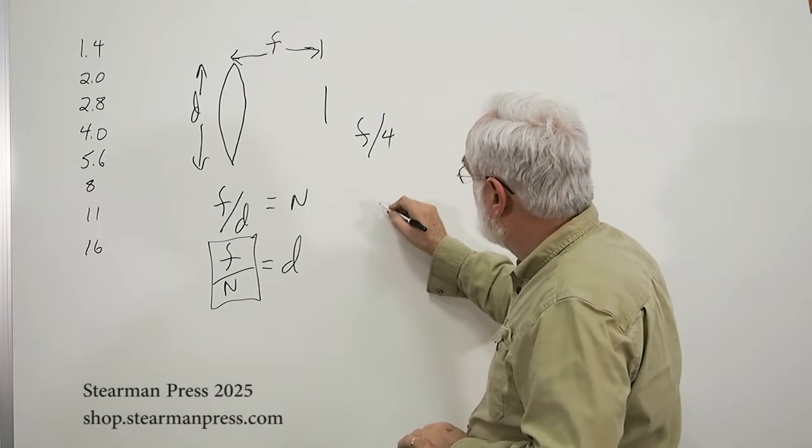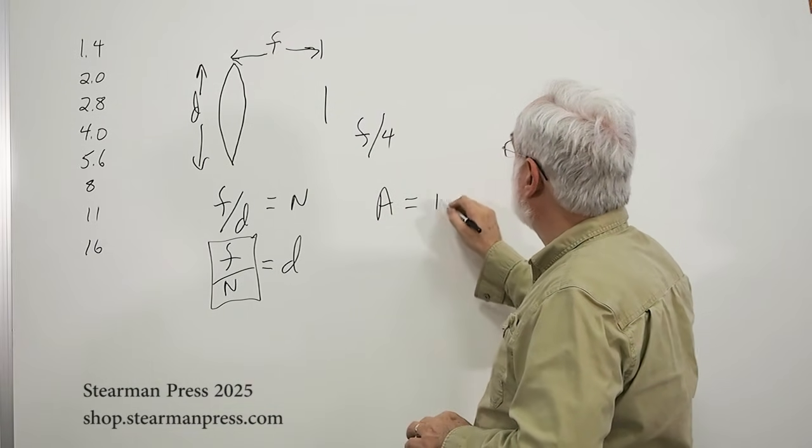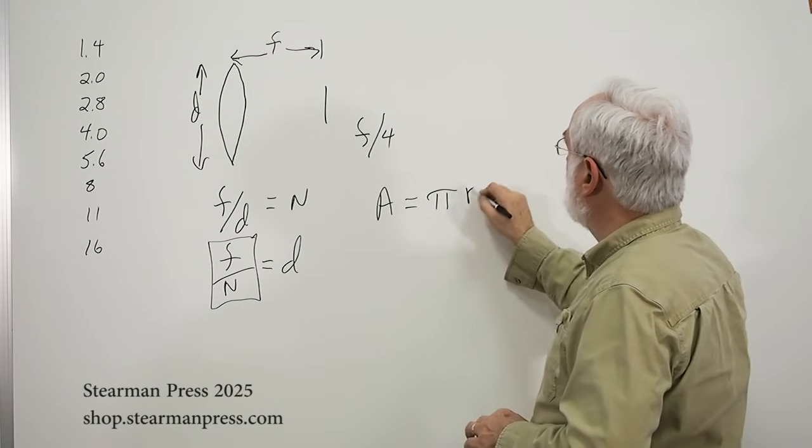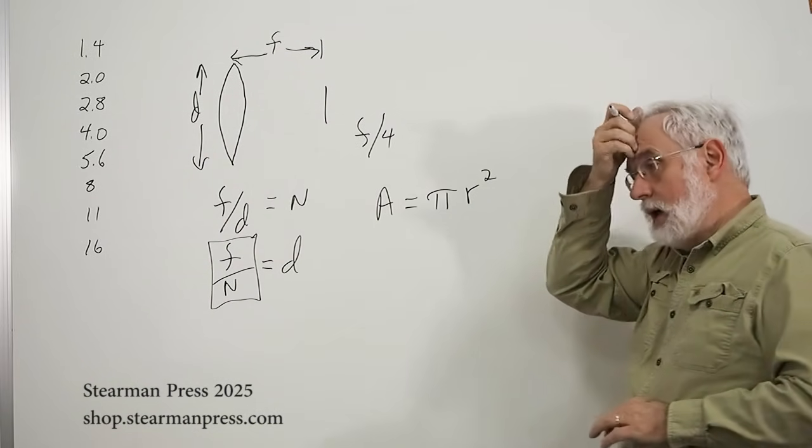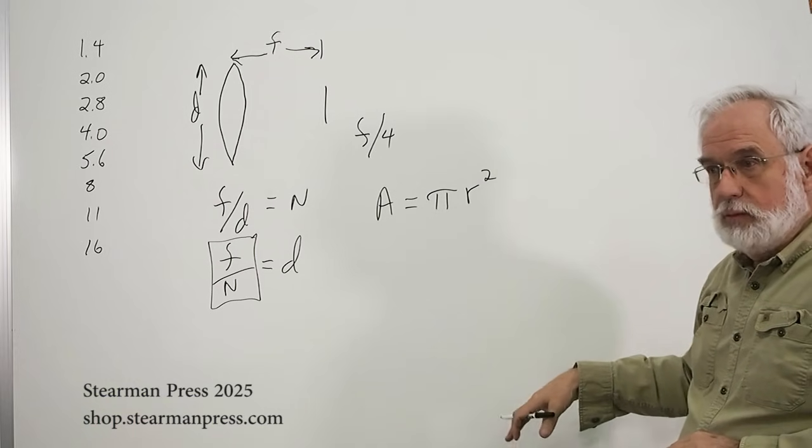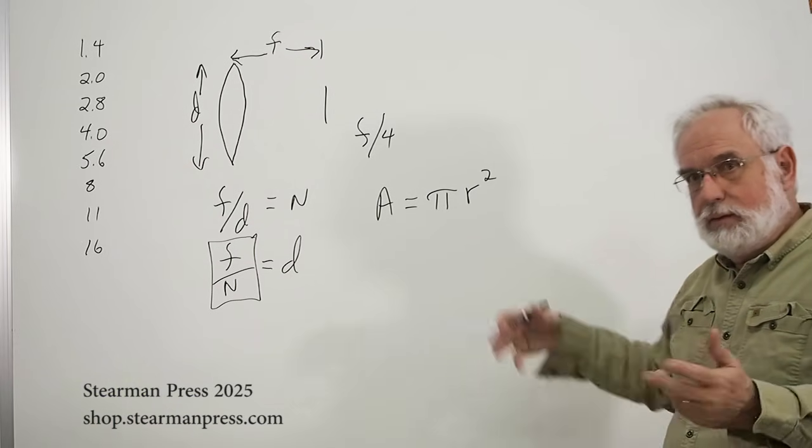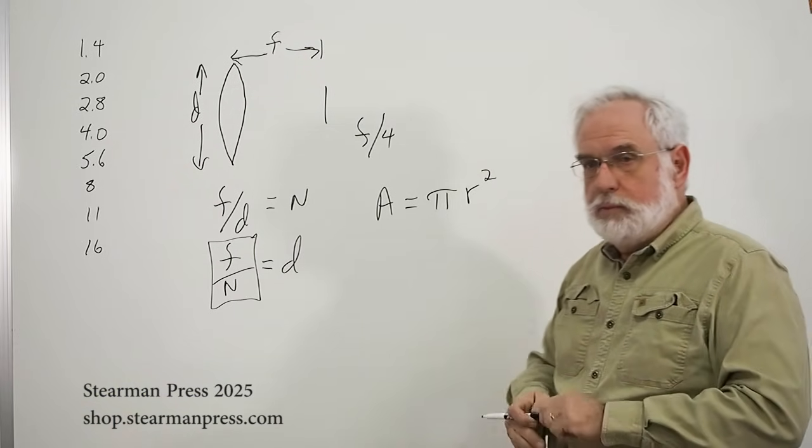And, you may remember, the area of a circle equals our old favorite pi times the radius squared. Now, I'm not going to dive into deriving all the math here. If you really want to see it, we can publish it somewhere.